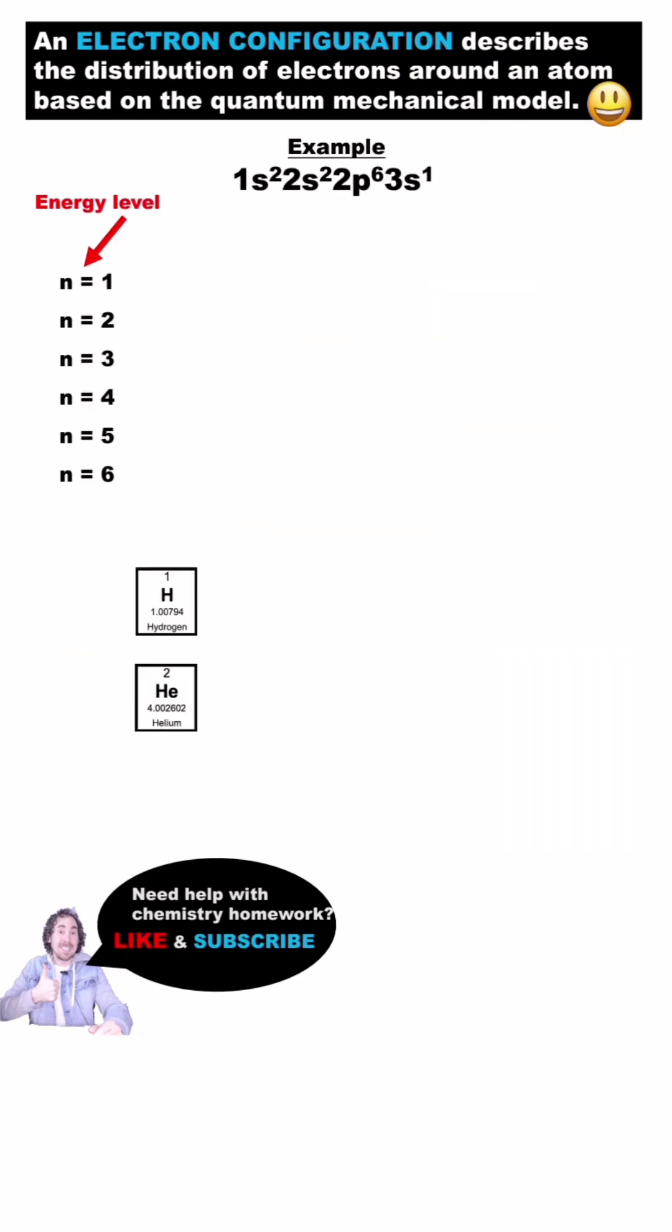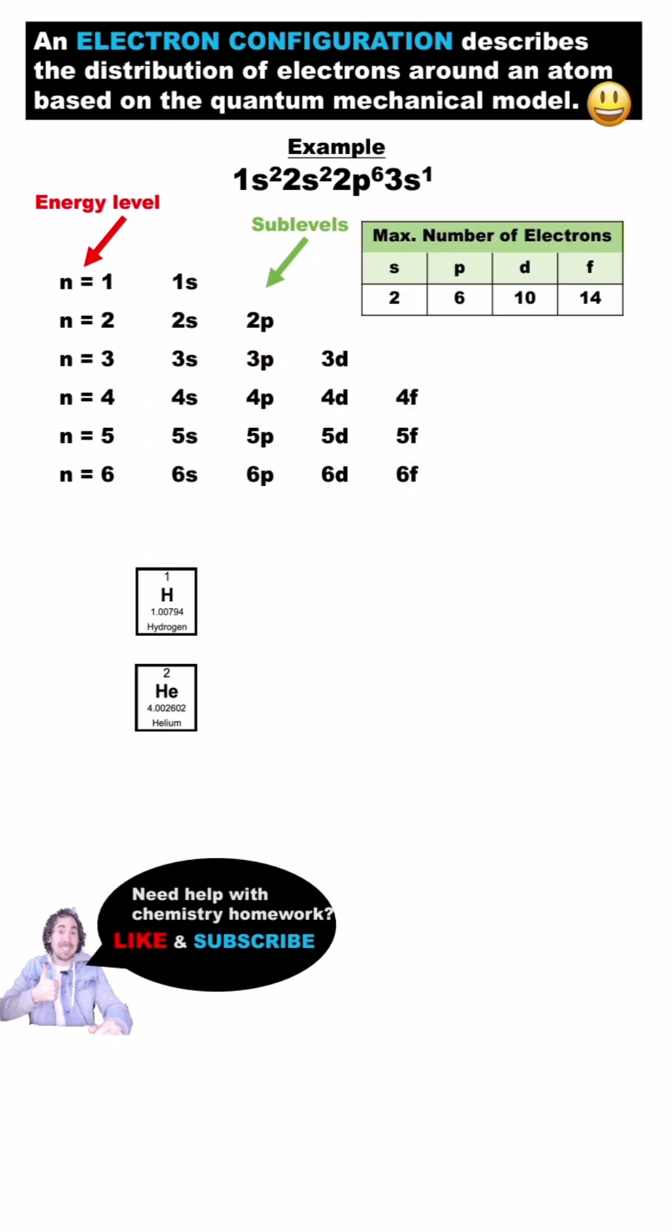Each energy level has different sublevels. Every energy level has an s sublevel, but then you add another sublevel each time you move up in energy until you get to f. The sublevels have a certain maximum number of electrons. S can hold 2, p can hold 6, d 10, and f 14.